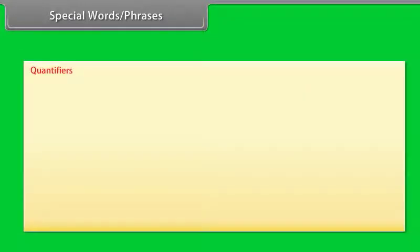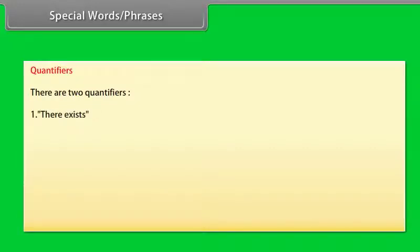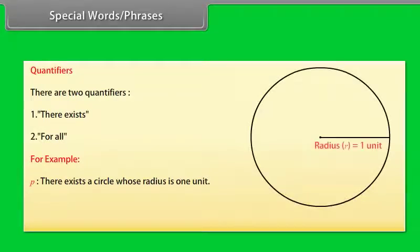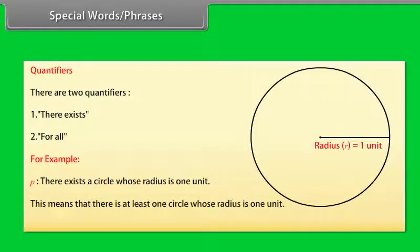Quantifiers: there are two quantifiers — (1) there exists, (2) for all. For example, P: there exists a circle whose radius is one unit — this means there is at least one circle whose radius is one unit.